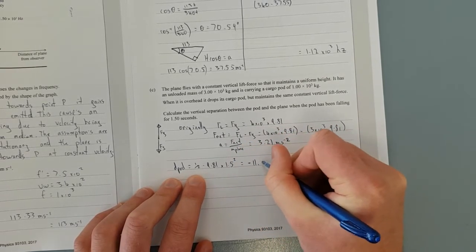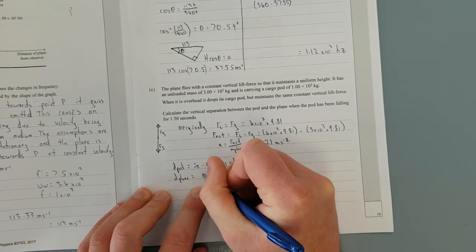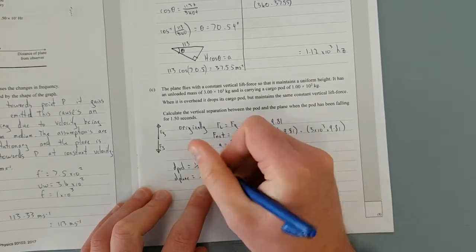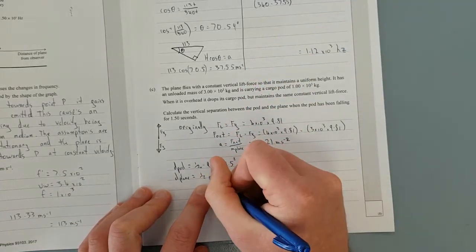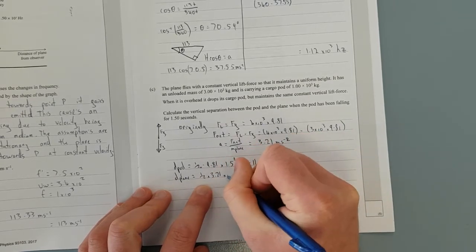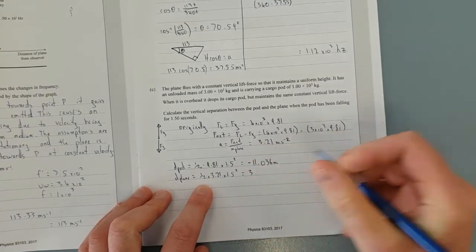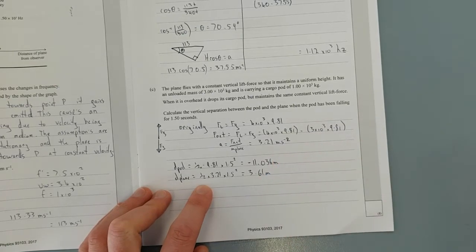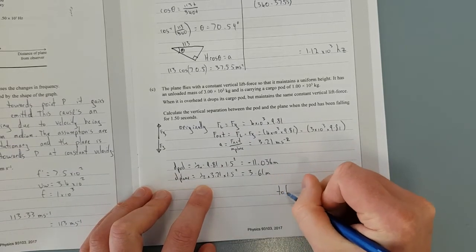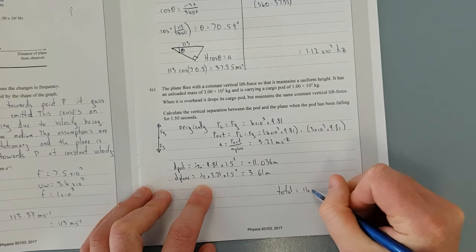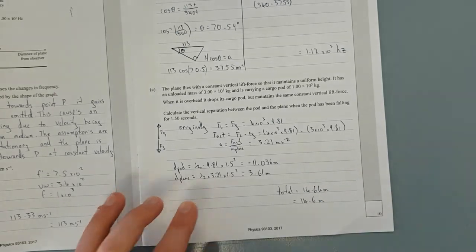And distance of the plane is equal to the same again. Half, because it's accelerating upwards, times 3.21 times 1.5 squared gives me 3.61 meters. So the total distance, the total vertical separation, is equal to 14.64 meters or 14.6 meters at 3SF.